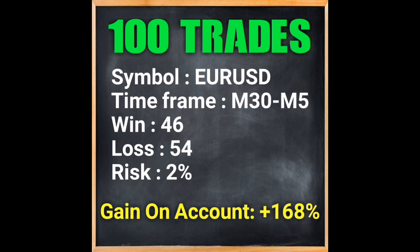The result of 100 consecutive trades on the BTCUSD symbol in the 5-minute time frame was 46 wins and 54 losses. At a trading risk of 2%, and with take profit larger than stop loss according to the strategy, the gain on account equals 168% profit — which is a great statistic.